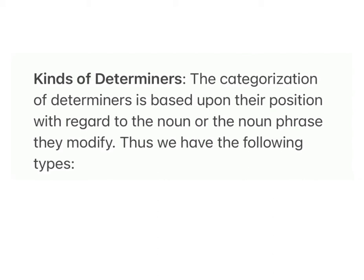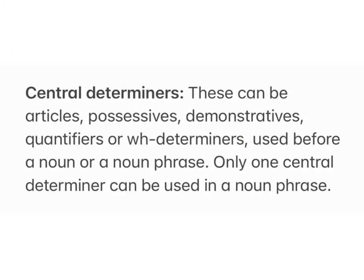The categorization of determiners is based upon their position with regard to the noun or noun phrase they modify. We have the following types: Central determiners — these can be articles, possessives, demonstratives, quantifiers, or wh-determiners used before a noun or noun phrase. Only one central determiner can be used in a noun phrase.